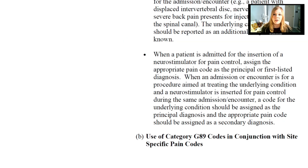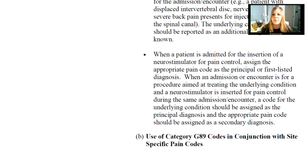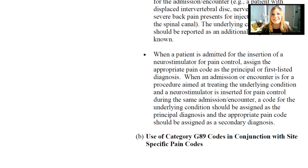When the patient is admitted for the insertion of a neurostimulator — an implanted device that sends a tingling sensation to your nerves so that instead of feeling intense back pain, you just feel a little tingle — assign the appropriate pain code as the principal or first listed diagnosis. When an admission is for a procedure aimed at treating the underlying condition and a neurostimulator is inserted for pain control during the same admission, a code for the underlying condition should be assigned as the principal diagnosis, and then the appropriate pain code would be assigned secondary.